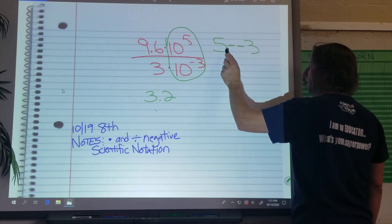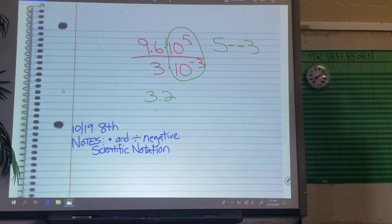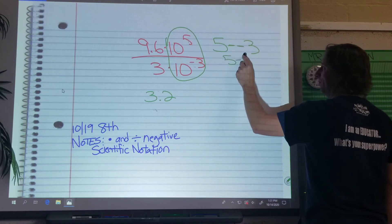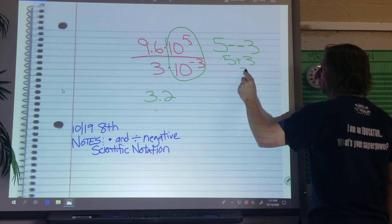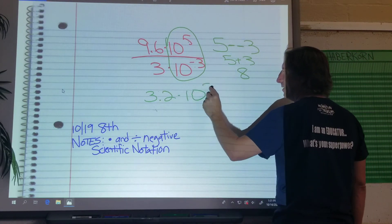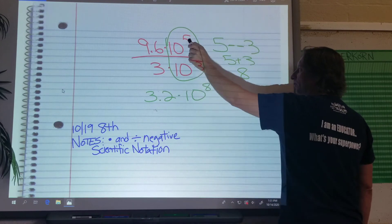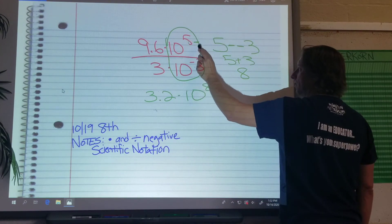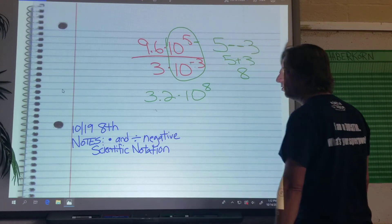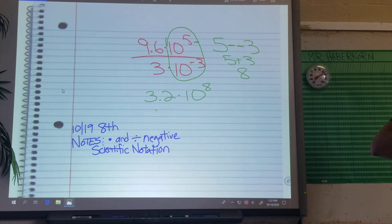It's not just 5 minus 3. It's 5 minus negative 3, right? So it's probably a good idea to write that out. Then we've got to think back to 7th grade. Two negatives touching turn into a plus. Positive 8. So times 10 to the positive 8. Okay? 5 minus negative 3. It's not just 5 minus 3. So that's where it gets, that's the trick. That's the only thing that's a little iffy on these, all right?